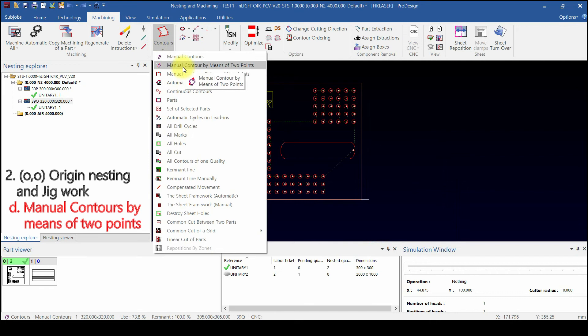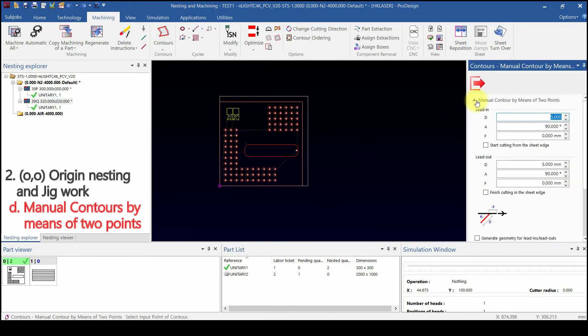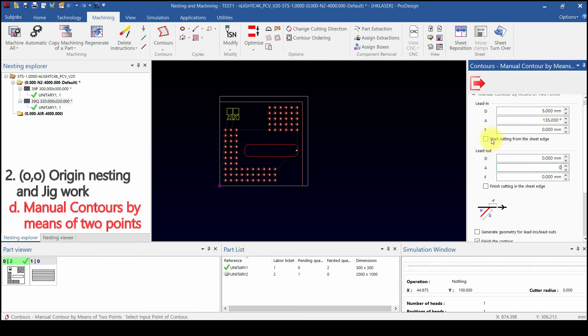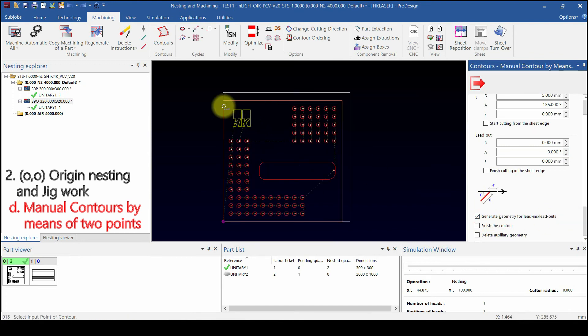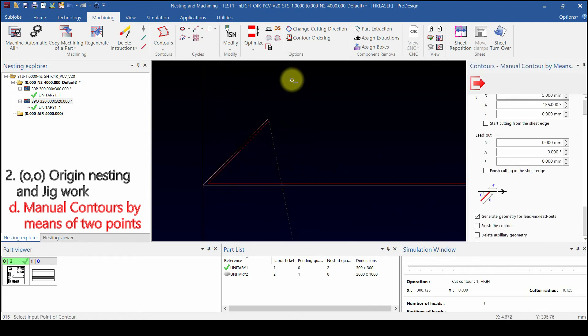Manual contours by means of two points can make lead-in when cutting line. The angle value is important. Because there is not enough margin in material, it will be dangerous if lead-in is longer than margin. So be careful when you input lead-in and angle before selecting line. Click start and end point to make machining. Check nearby starting point to see lead-in.